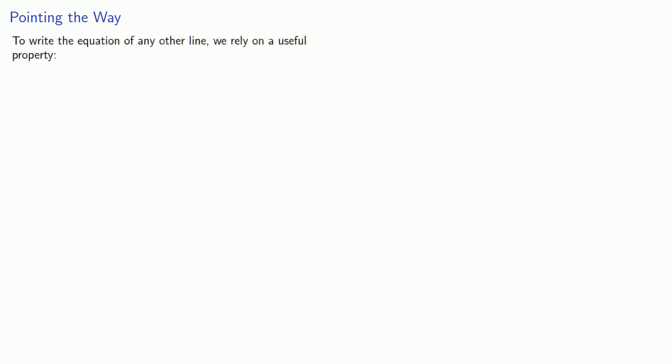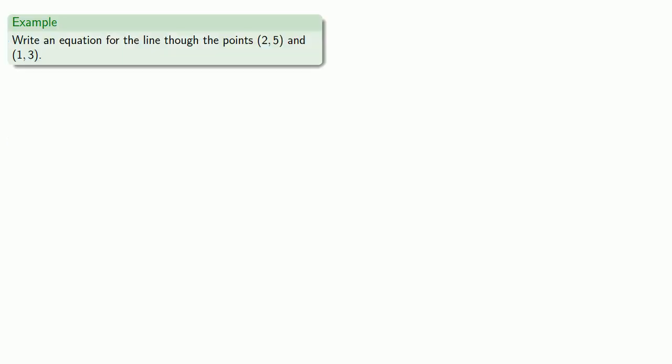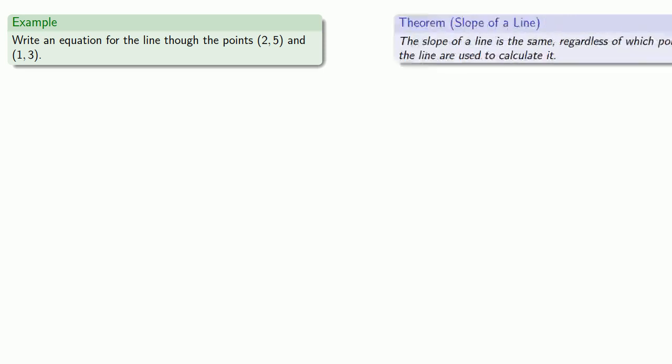What if our line isn't vertical or horizontal? To write the equation of any other line, we'll rely on a useful property: the slope of a line is the same regardless of which points on the line are used to calculate it. So let's try to write the equation of a line through two given points.